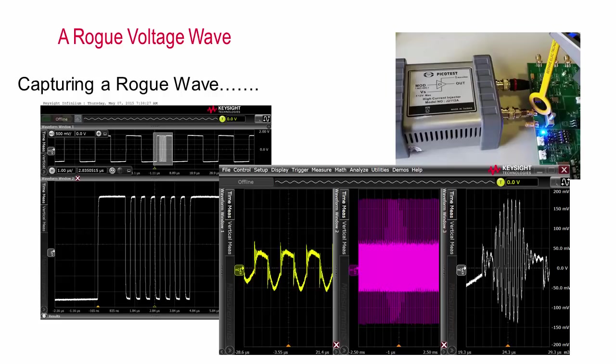In the worst case, the voltage can become large enough to permanently damage sensitive components, while in more benign cases, the rogue wave can create excessive system noise, including increased jitter and serial I/O data links.